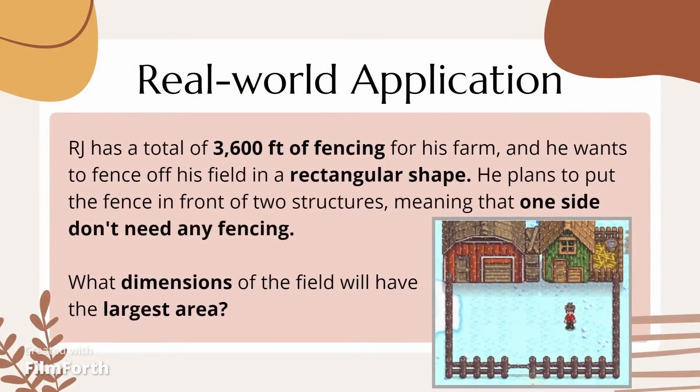The second real-world application of derivatives is this. RJ has a total of 3,600 feet of fencing for his farm, and he wants to fence off his field in a rectangular shape. He plans to put the fence in front of two structures, meaning that one side doesn't need any fencing, as shown in the illustration. The question is: what dimensions of the field will have the largest area?